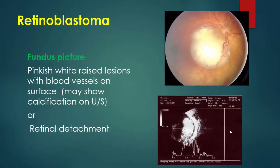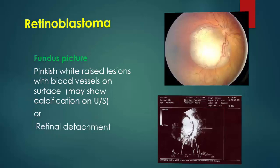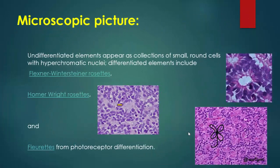In the fundus picture of retinoblastoma, we can show a pinkish-white raised lesion with blood vessels on the surface, calcification especially on ultrasound, or retinal detachment. Microscopically, undifferentiated elements appear as collections of small rounded cells. Differentiated forms include Flexner-Wintersteiner rosettes, Homer Wright rosettes, or fleurettes from photoreceptor differentiation.